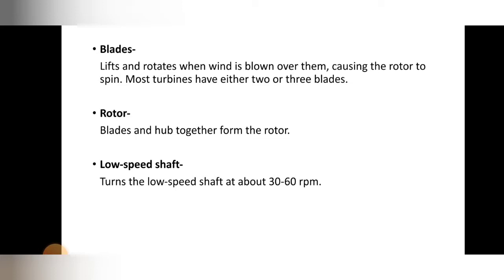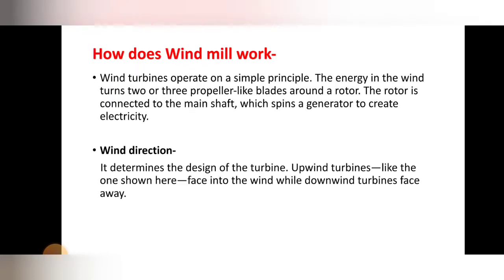Next component: rotor. The rotor is one of the important parts in a windmill. Blades and hub together form the rotor. Then the low-speed shaft — the shaft is connected to the rotor and turns at about 30 to 60 RPM (revolutions per minute). Those are some components which help in the working of windmills. Now we are going to see in detail how windmills work through an animation.